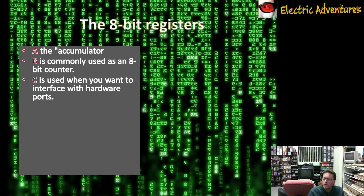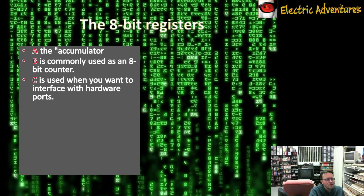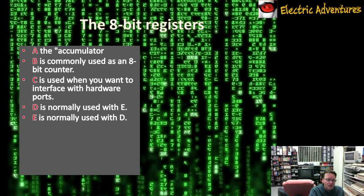C is quite often used in some of the statements for dealing with ports. Ports are interfaces from the CPU out to things and to devices like your joysticks, the video display, the sound output, and things like that. But all of these registers can be used for more than one purpose. There are certain instructions that can only be used with certain ones, and that's why these are listed as I'm doing them now. D is normally used with E, and E is normally used with D, but you can still use them singly.